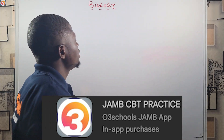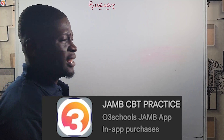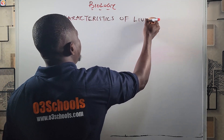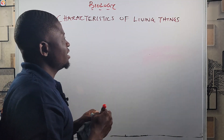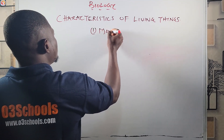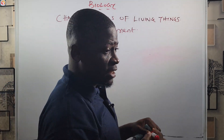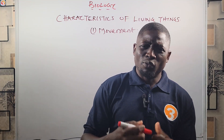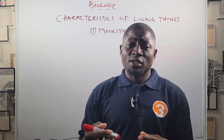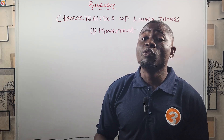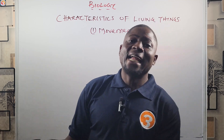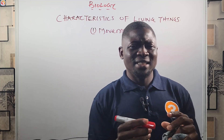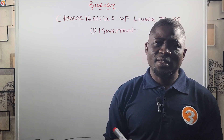Now let's look at the characteristics of living things. The first characteristic is movement. Living organisms move from one place to another — they are able to move and also to grow. Some living things move very fast while others move very slowly. You cannot compare the speed of a tiger with a snail — their movements are at both ends of the spectrum. Movement is a key characteristic of living things.